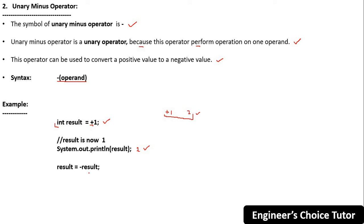Now what I am doing? I am writing result equals minus result. So what you are doing here by the help of this minus, means unary minus operator, you are converting a positive value to a negative value because in the result, which value was present? Plus one was present. That is a positive value. And you are converting it to a negative value by using this minus operator.